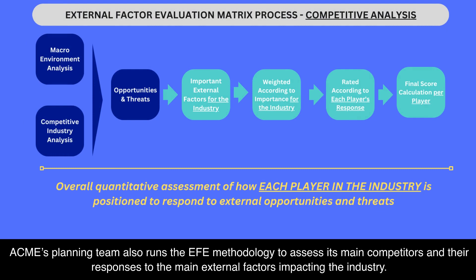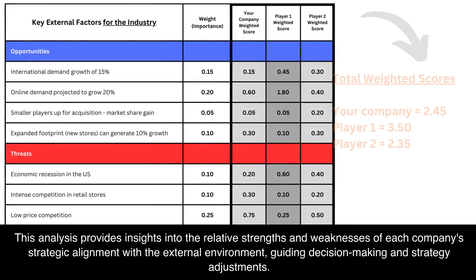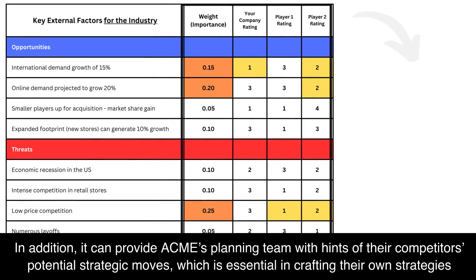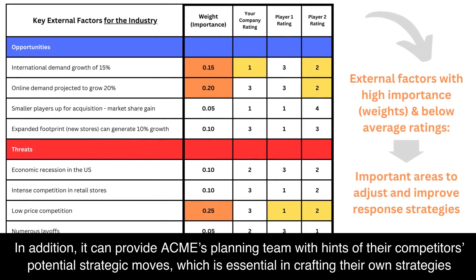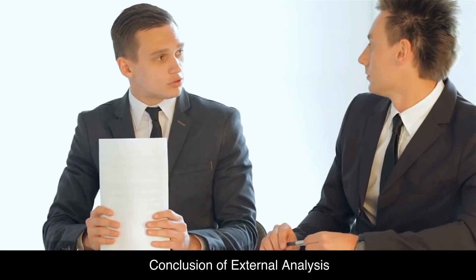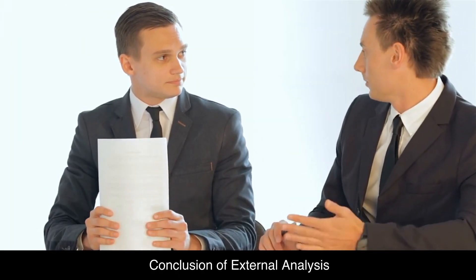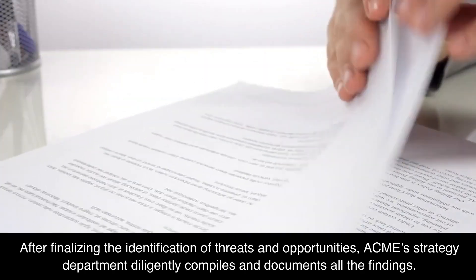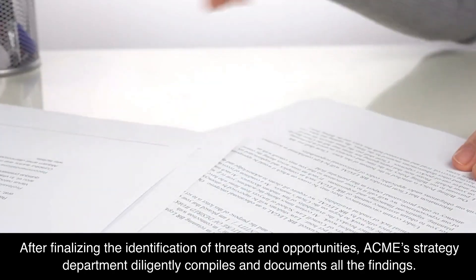Step 2: Industry Analysis. After completing the macro environment analysis, Acme moves on to the industry analysis phase. They utilize Porter's Five Forces framework to gain insights into the competitive landscape. This involves analyzing suppliers, buyers, new entrants, substitutes, and competitors. By understanding these elements, Acme gains valuable knowledge about the industry dynamics and identifies potential opportunities and threats.